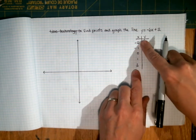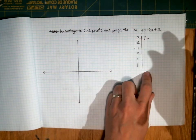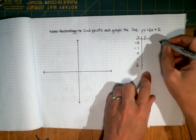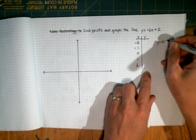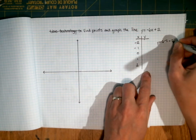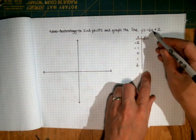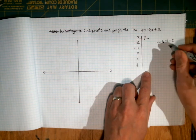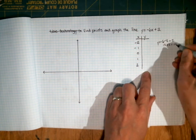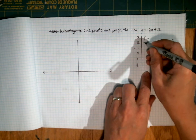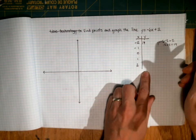Now you need to plug these values into your equation and figure out what the corresponding y is. The first one is y equals negative 6 times negative 2 plus 2. I took the negative 2 and substituted it in where I saw the x. That makes 12 plus 2, which is 14. So when x is negative 2, y is 14.